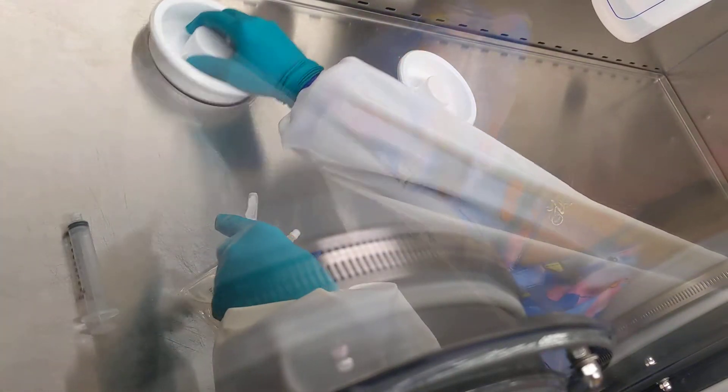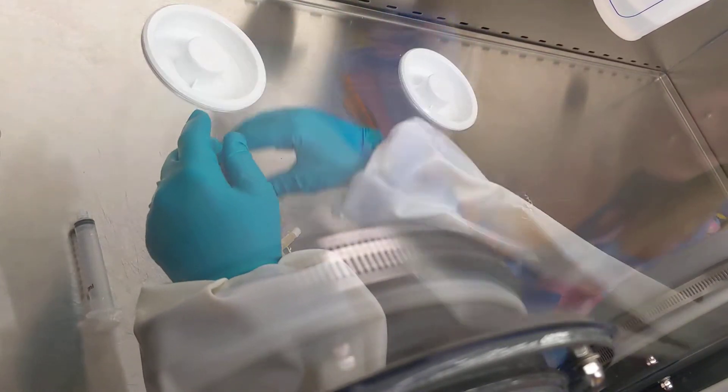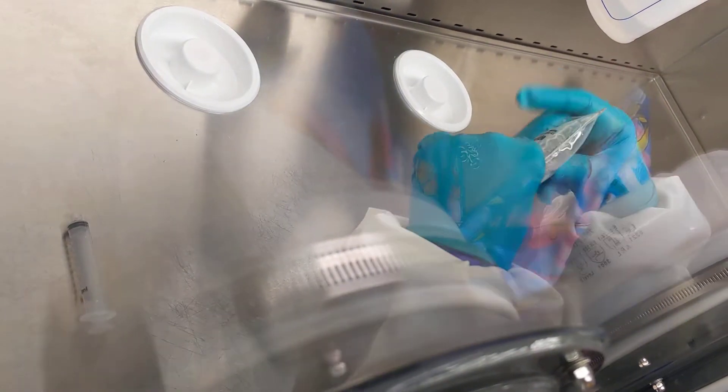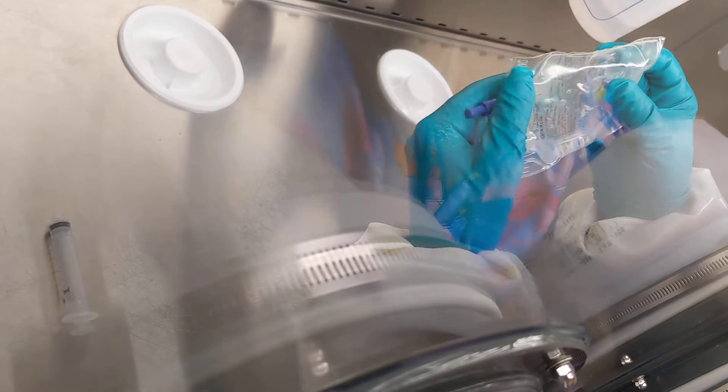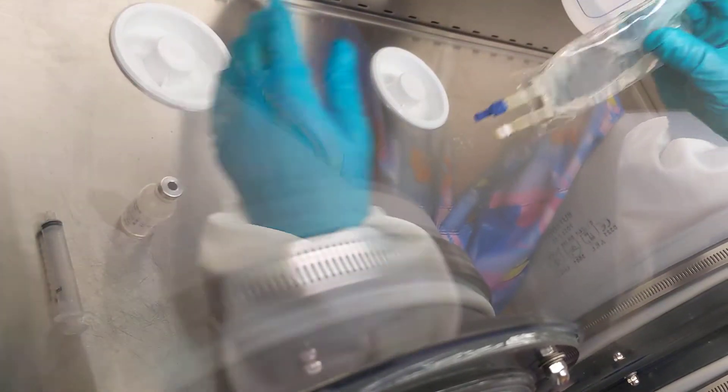We have sharps containers underneath here. You always visually inspect the product when you're done mixing to make sure that you didn't core the top of the vial and now have a piece of rubber floating around in there.